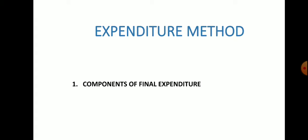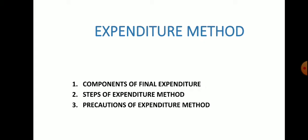First of all we have to know about the components of final expenditure — how many components are there, what are those components, and the importance of those components. Then we will see the steps of the expenditure method — the procedure or steps through which we can calculate the national income. After that we will see the precautions of the expenditure method, some important points to remember before calculating national income.